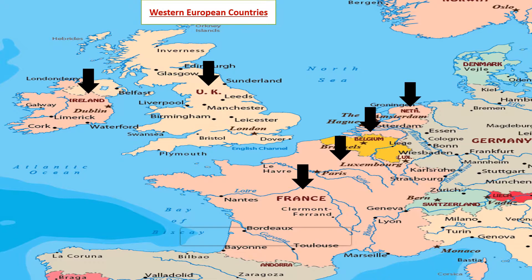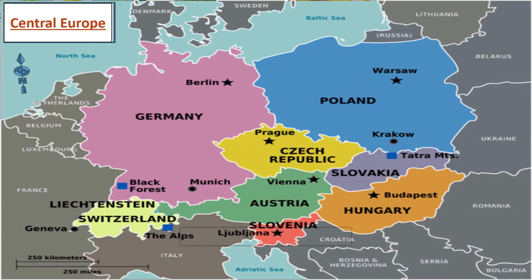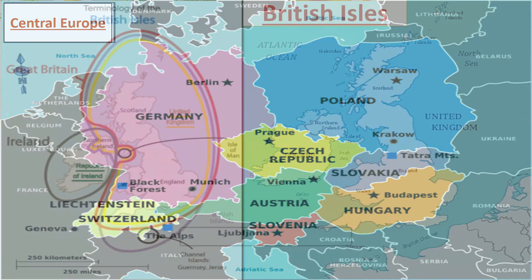Today in our video we are going to start with Western European countries. They include United Kingdom, also referred to as UK, Ireland, France, and Lowland countries — these countries are shown with the help of arrows. Then come Central European countries, which include Germany, Poland, Hungary, Austria, Czech Republic, Switzerland, and Slovak Republic.